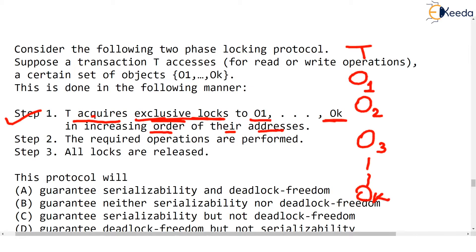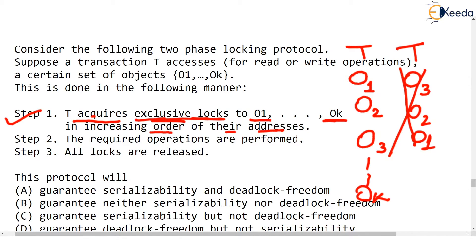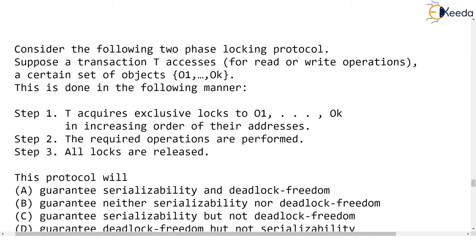It will never try to acquire a lock first on O3, then O2, then O1. In simple terms, 'addresses' can be thought of as indexes, and locks are taken in increasing order. This is the only small change from pure two-phase locking protocol — the additional condition that before locking O2 you must lock O1, before locking O3 you must lock O2, and so on.